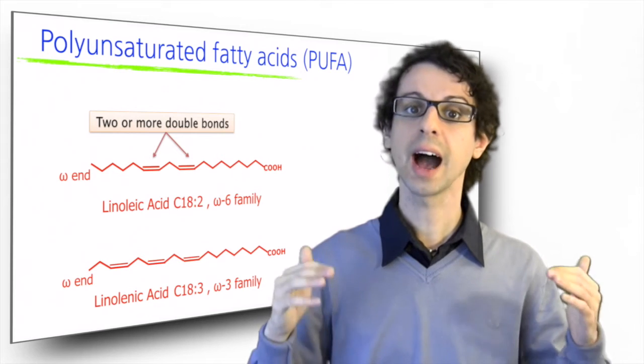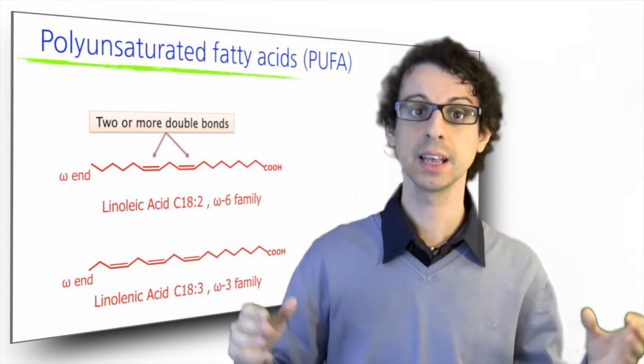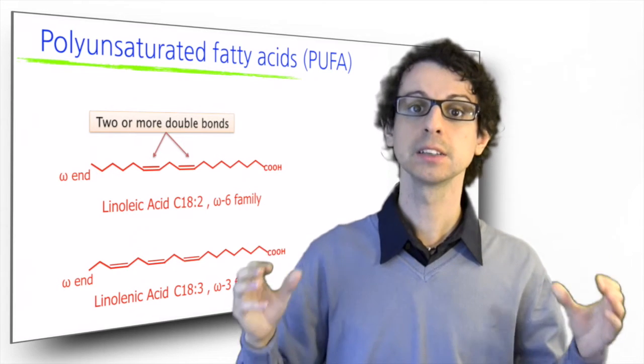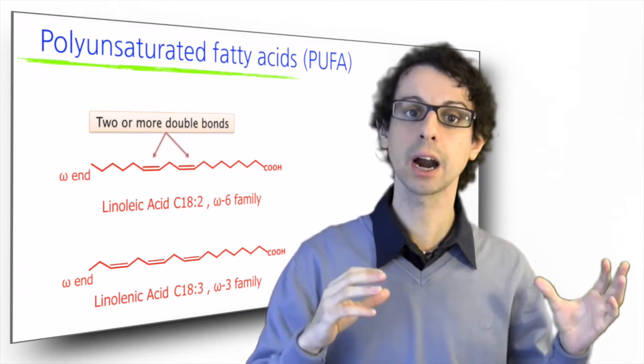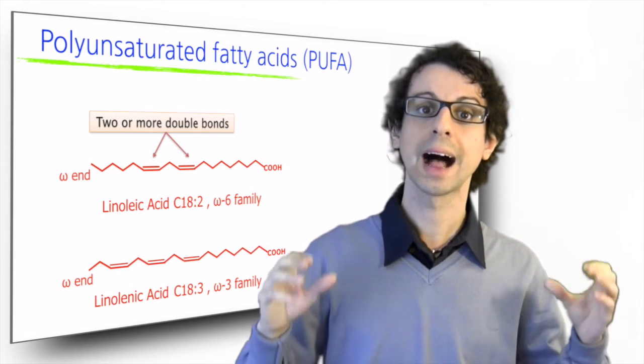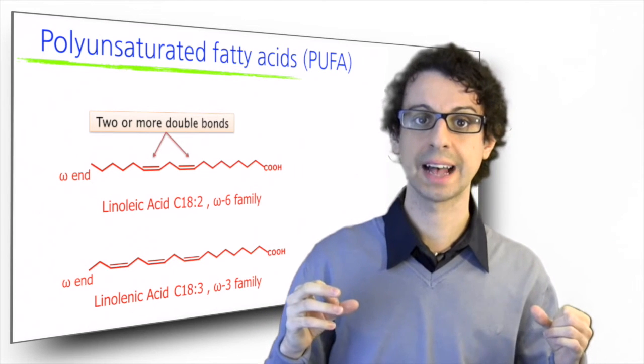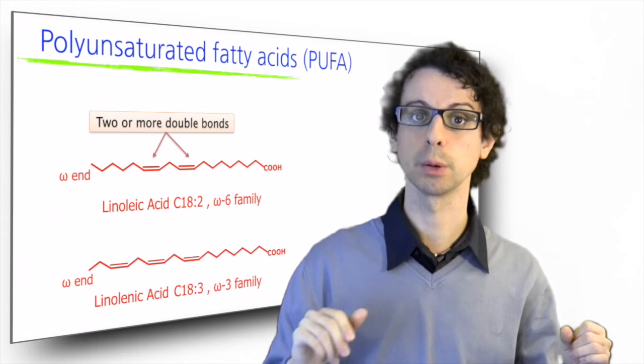The other nutritionally relevant family of polyunsaturated fats is the omega-3 family, so fatty acids in which the first double bond is located three carbons away from the omega end. This molecule here is alpha-linolenic, which is the other essential fatty acid in our diet. It is 18 carbons long with three double bonds.